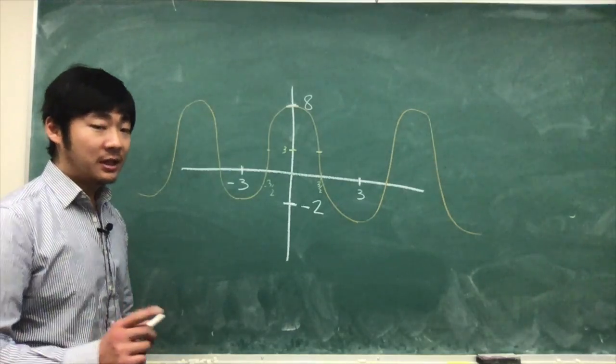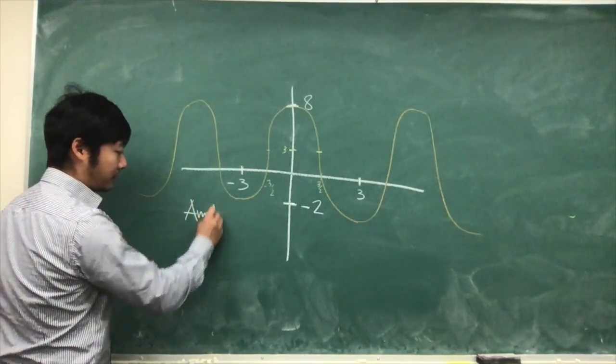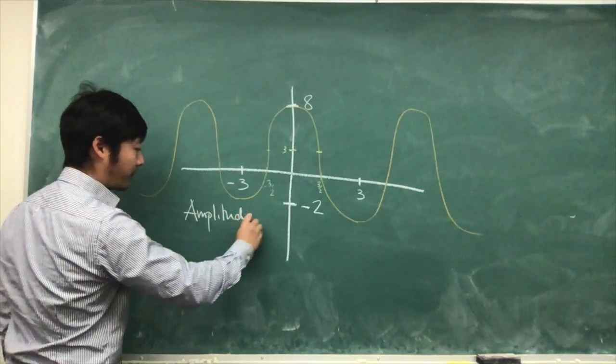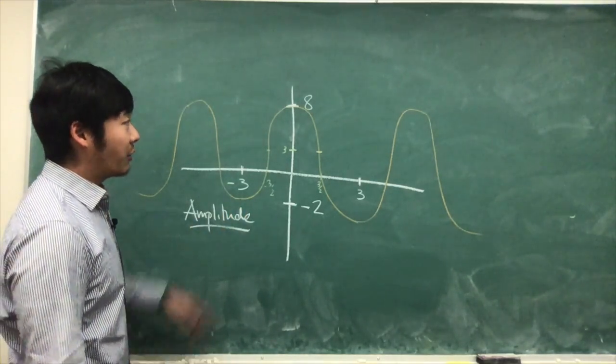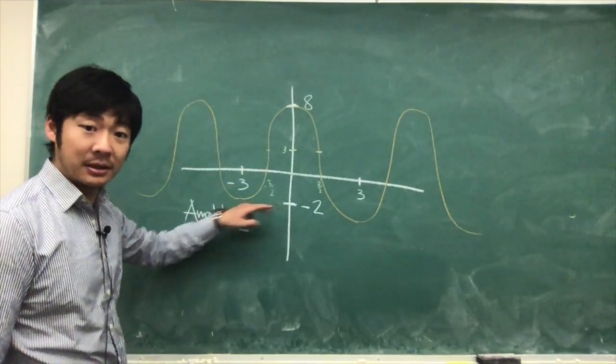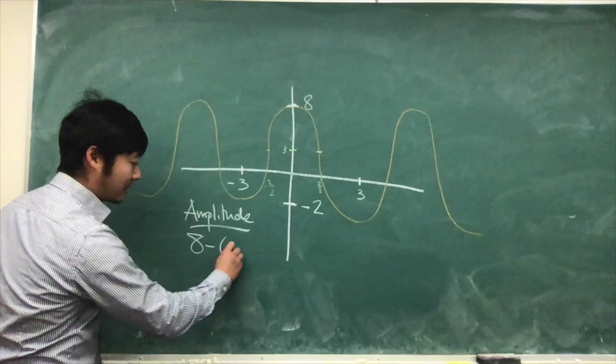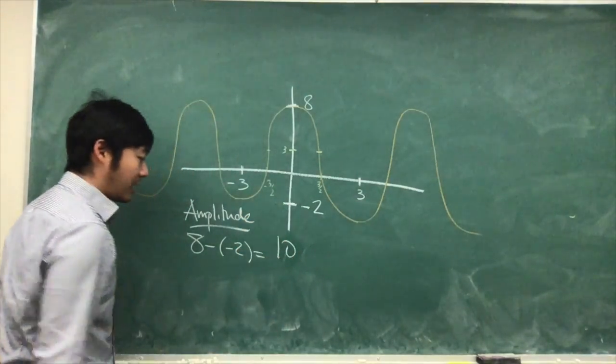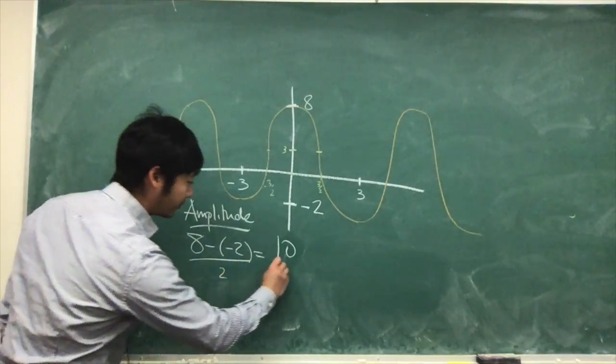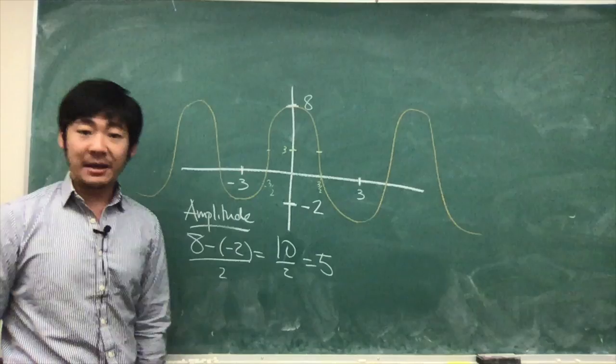First we need to figure out what the amplitude is. We find where the maximum and minimum are, then subtract them from each other. So 8 minus negative 2 is 10, and then we divide it by 2. This will be our amplitude.